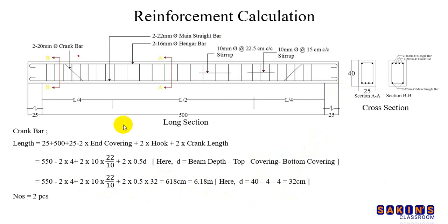This is total nose, two pieces of crank bar. Total weight is nose into length into the length of 1 meter rod. This is 20mm, so this is total weight of crank bar.